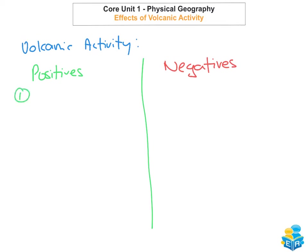The first positive effect of volcanic activity is that new land is created. That's a very important effect and it's definitely a big positive. The second one is that it leaves the land very fertile. After the volcano erupts, it leaves the soil very rich and fertile and makes it really good for growing crops.